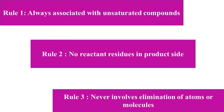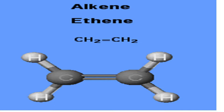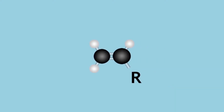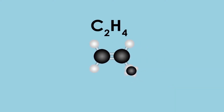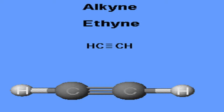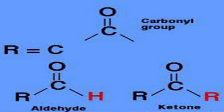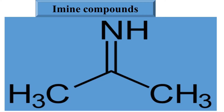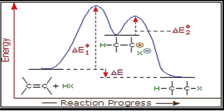There are three basic rules for the addition reactions. Rule one: addition reactions are always associated with unsaturated compounds. Rule two: no reactant residues are formed on the product side. Rule three: the addition reaction never involves elimination of atoms or molecules. Addition reactions are limited to compounds having multiple bonds — for example, carbon-carbon double bonds in alkenes, carbon-carbon triple bonds in alkynes, and carbon atoms bonded with oxygen as in carbonyl compounds like aldehydes and ketones.